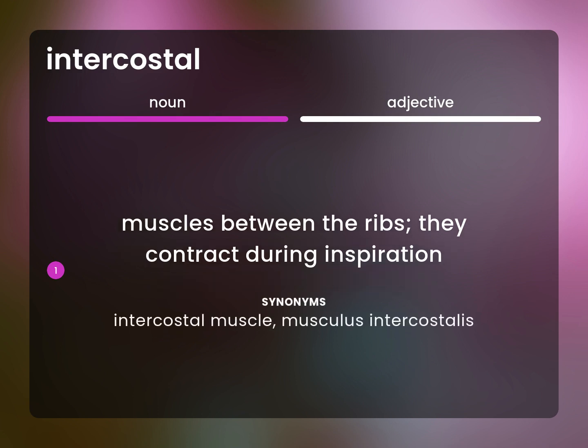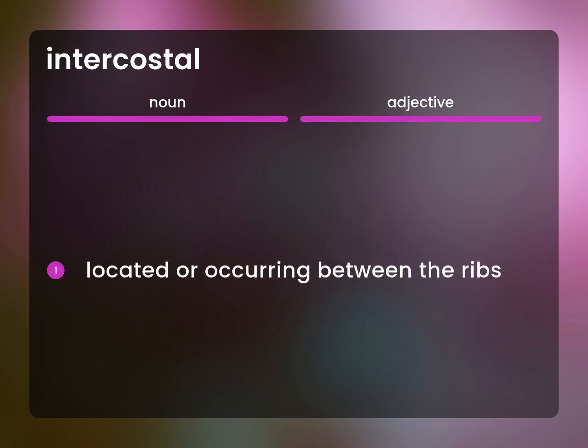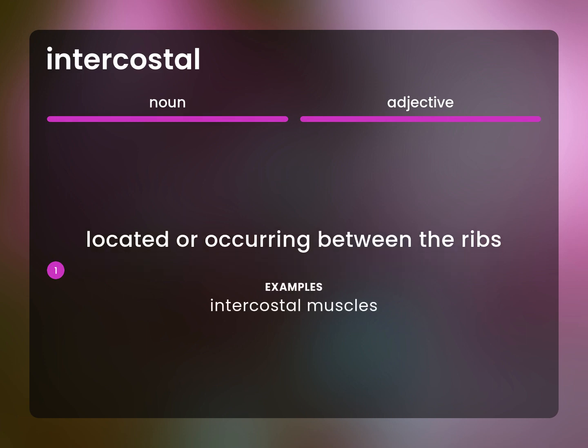Intercostal muscle. Musculus intercostalis. Located or occurring between the ribs. Intercostal muscles.